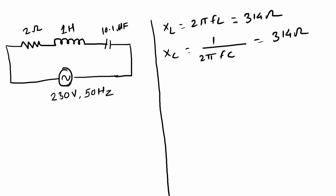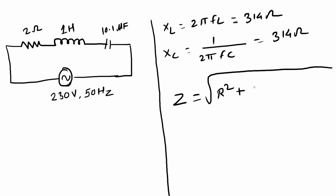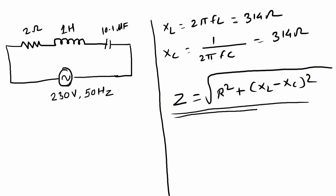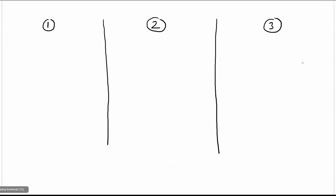To find out the impedance in an RLC circuit, the formula is: Z = √(R² + (XL − XC)²). This formula is really important and based on it the behavior of the RLC circuit is determined. There are three conditions. The first condition is that if the value of XL minus XC is equal to a positive number, that means the inductive reactance is more dominant than the capacitive reactance.